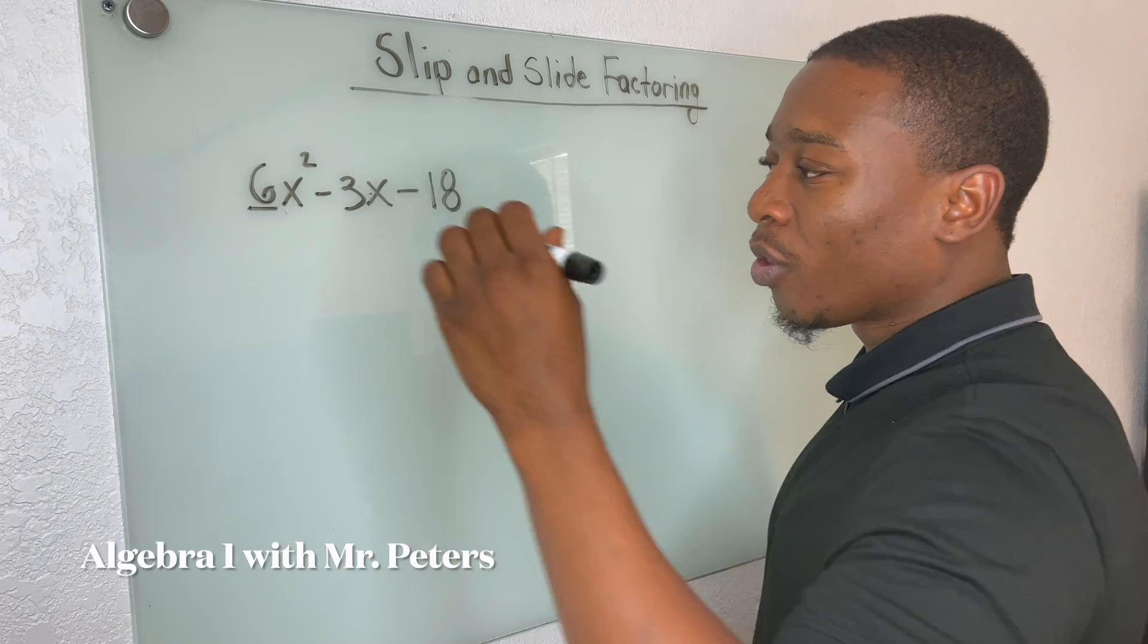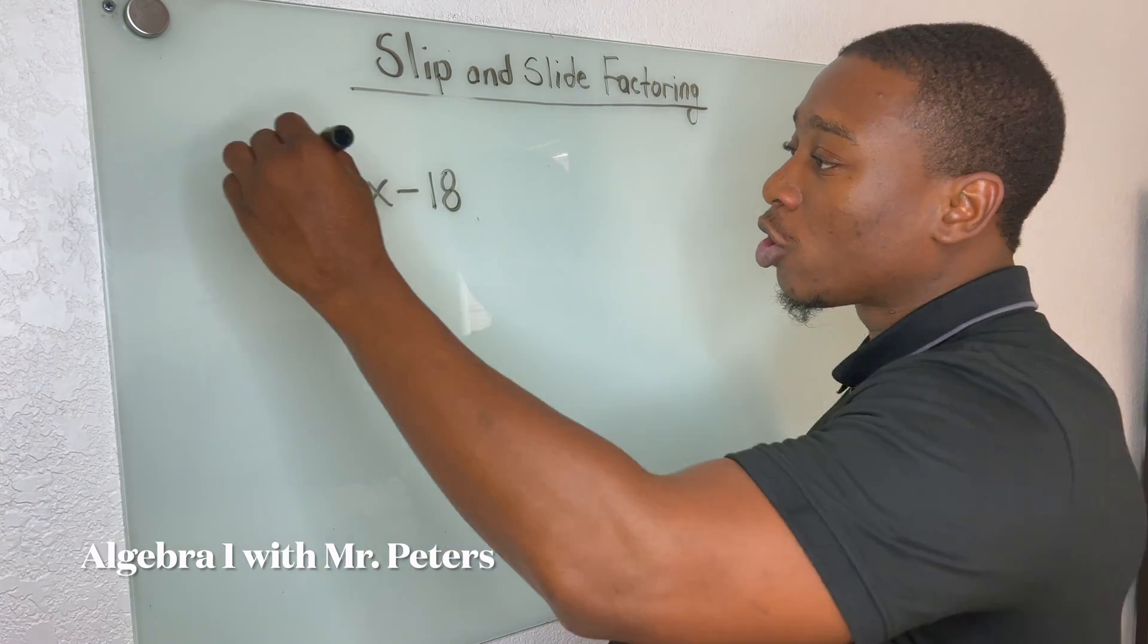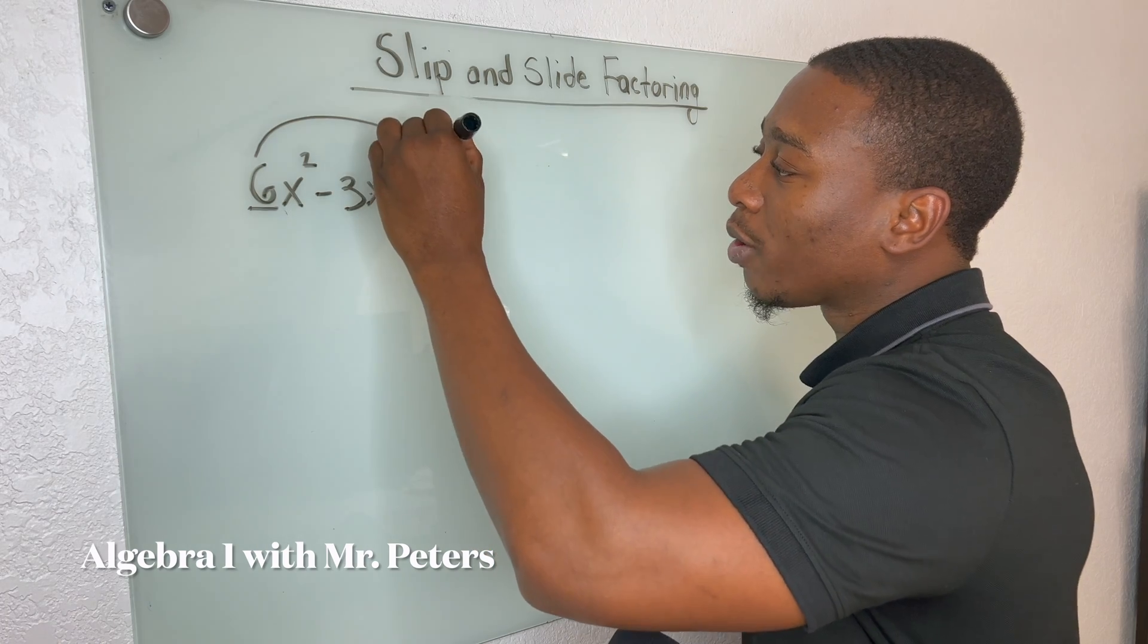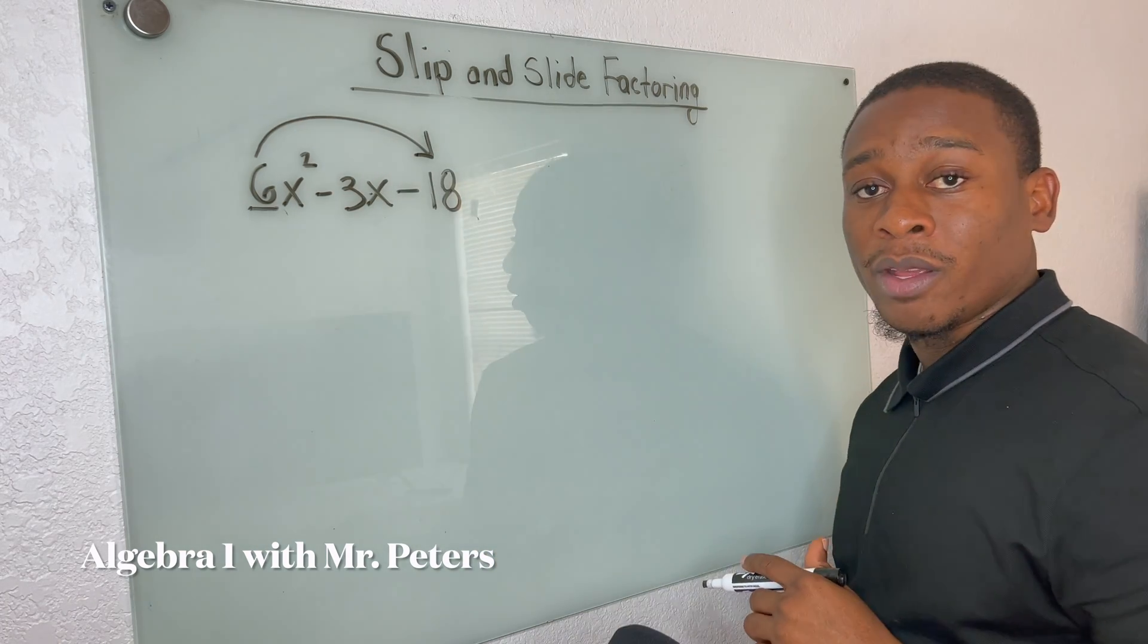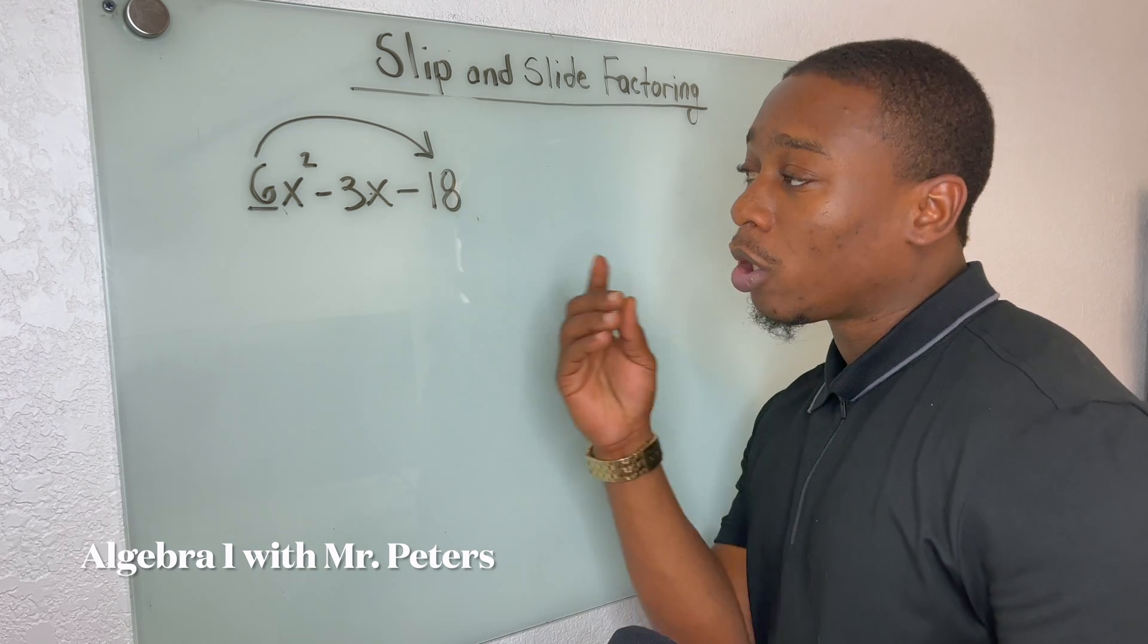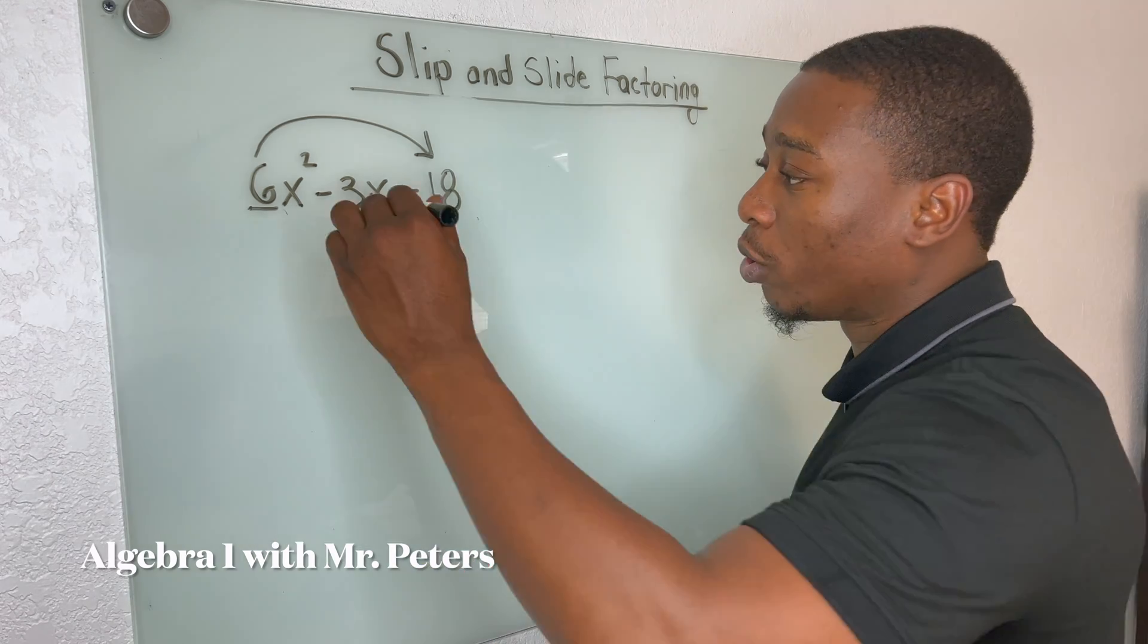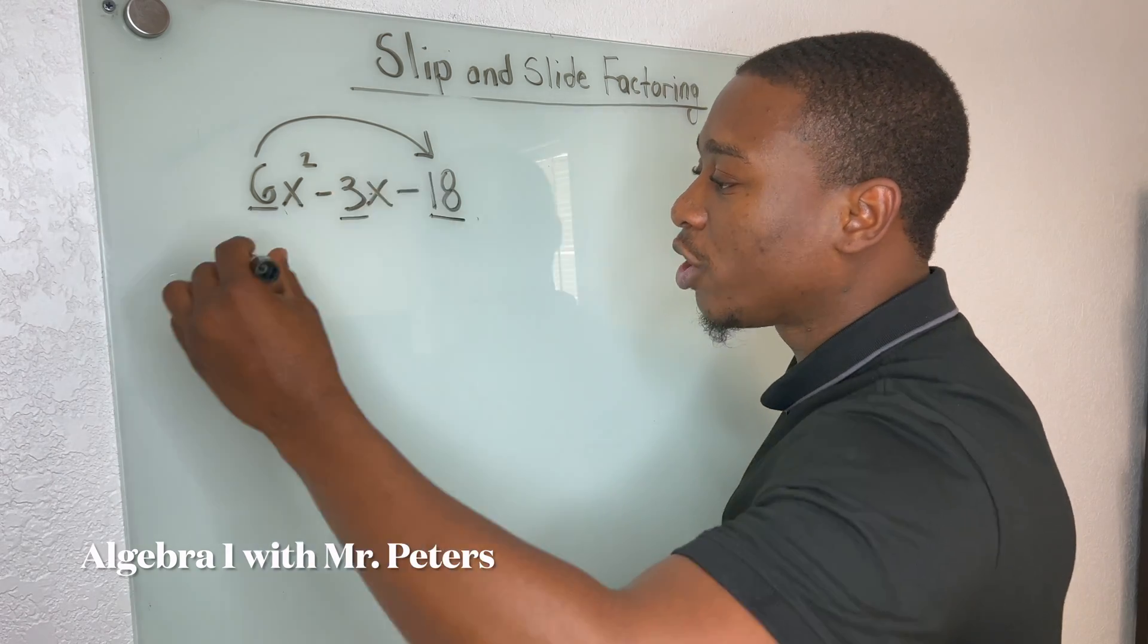So in our problem, we have a lead term that is greater than one. So what we're going to do is use the slip and slide method. But the issue is students sometimes forget to look and check for a GCF.